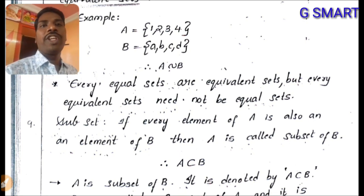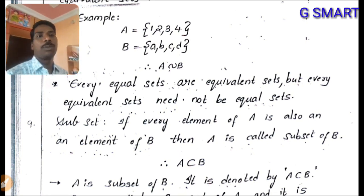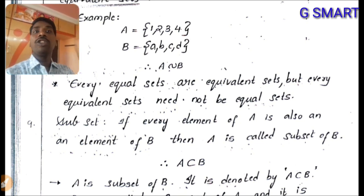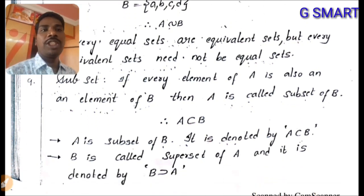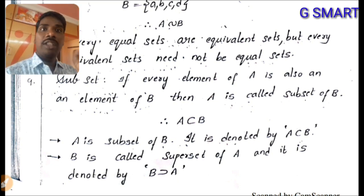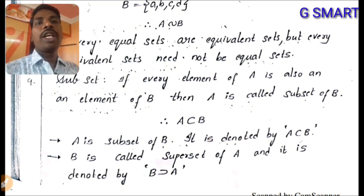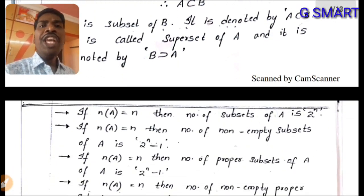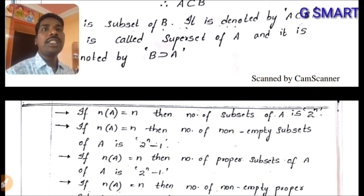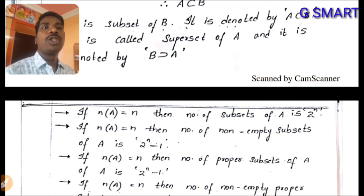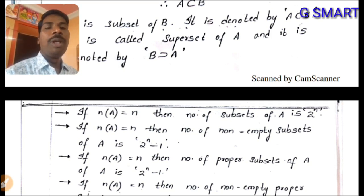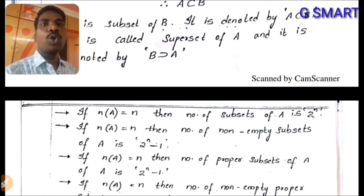Subset: if every element of A is also an element of B, then A is called a subset of B, written as A ⊆ B. Then B is called the superset of A, written as B ⊇ A. If n(A) = n, then the number of subsets of A is 2^n. For example, if there are 3 elements, the number of subsets is 2³ = 8.